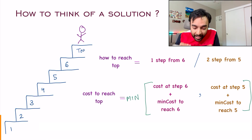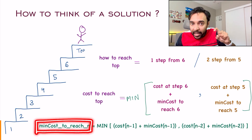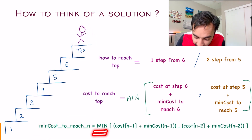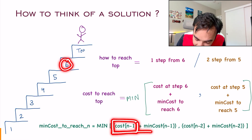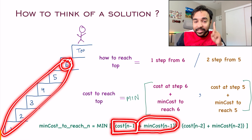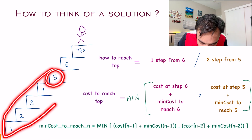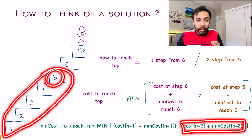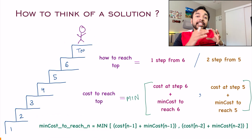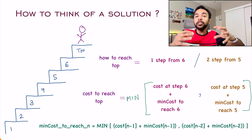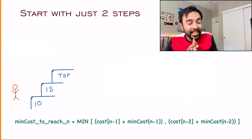The minimum cost to reach the top step is the minimum of two values. The first is: cost at the n-1th step plus whatever cost was required to reach up to n-1. The second is: cost at the n-2th step plus whatever cost was required to reach up to n-2. Out of both of these options, whichever is minimum is your cost to reach the very top. Based upon this idea, we can build up our solution from the bottom up.